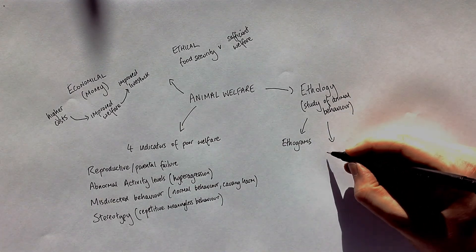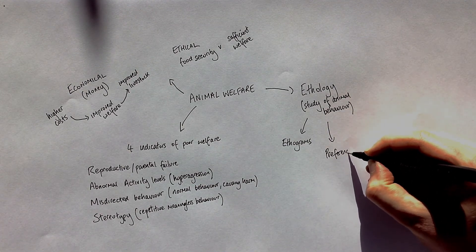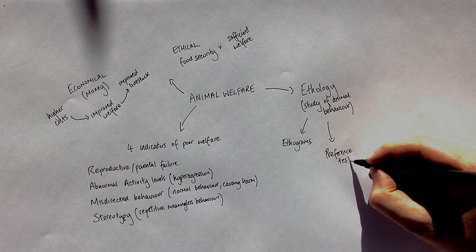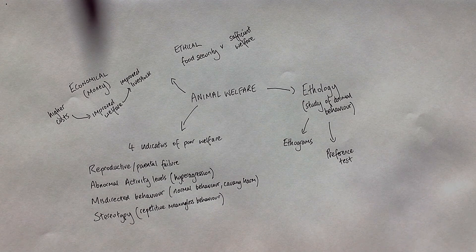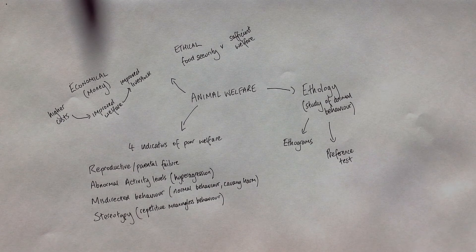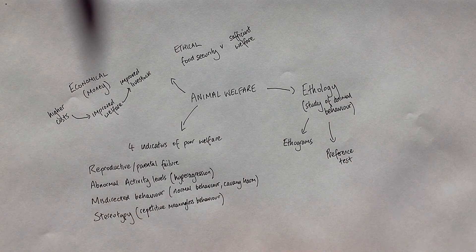Scientists can also carry out preference tests. This is a scientific experiment to find out what a particular animal's preferred behaviour is. For example, you might want to find out what type of food chickens prefer. You'd set out an experiment, control all the variables, and offer two different types of food. Whichever one the chicken eats more of indicates its preference.